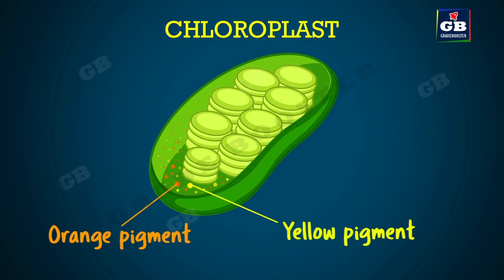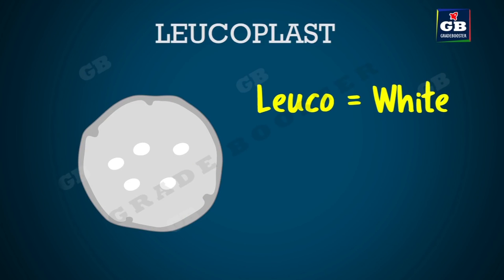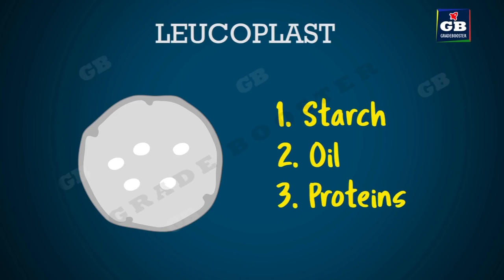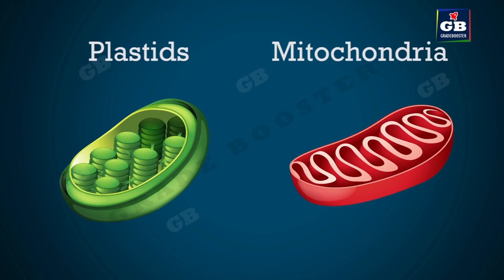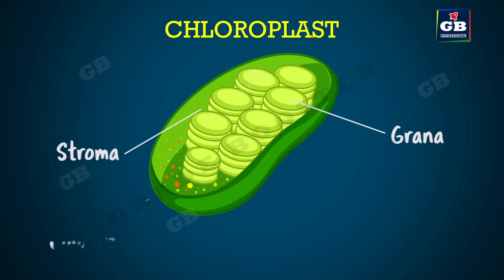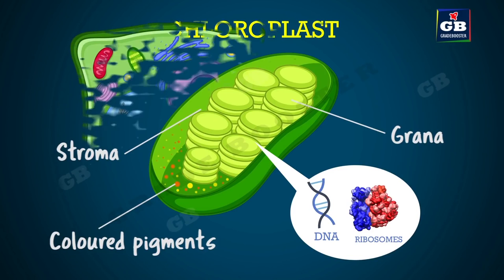Leucoplasts — 'leuco' meaning white — are colorless white plastids whose main function is the storage of materials such as starch, oils, and protein granules. Externally, plastids look similar to mitochondria. The internal organization of a chloroplast includes an innermost membrane folded and arranged in stacks called grana, and the space between the grana is filled by stroma. Like mitochondria, plastids also have their own DNA and ribosomes and can make their own proteins.